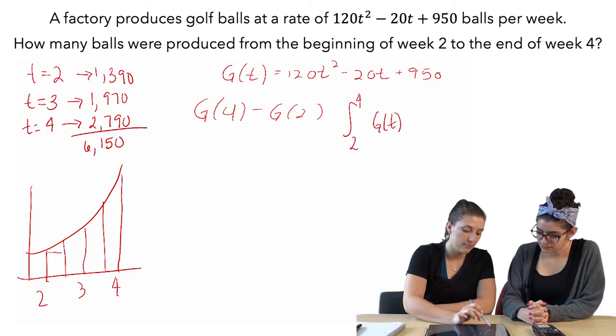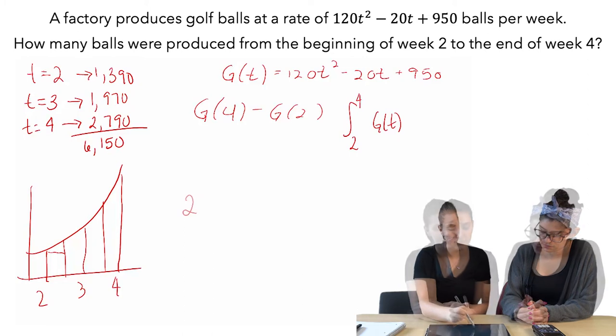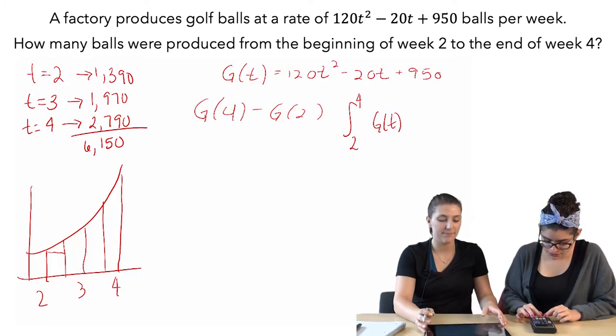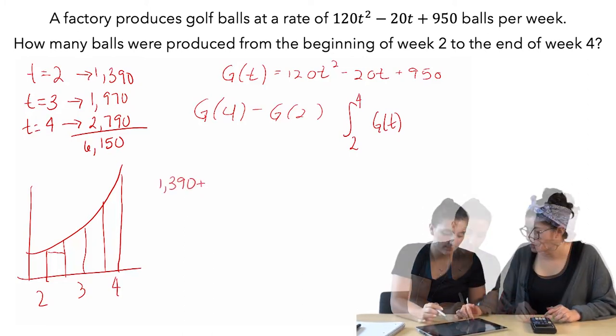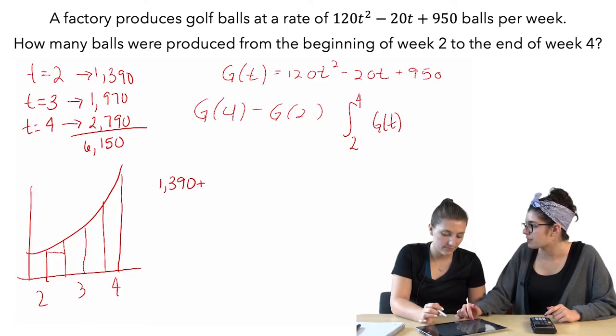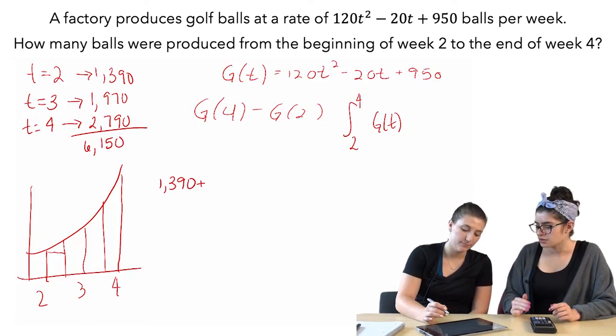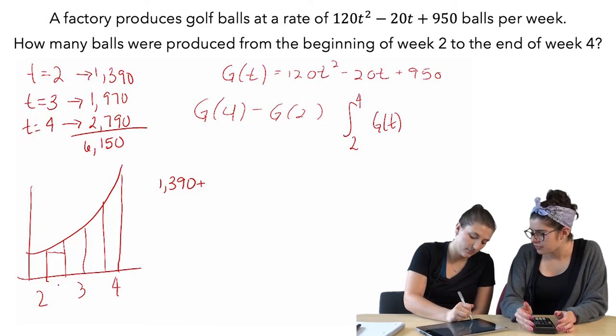So we have two. Two we already know. We got 1390. Okay. And then for 2.5, oh wait, we're doing the value of 2 times 0.5 though. Because our change in weeks is 0.5.